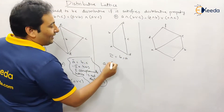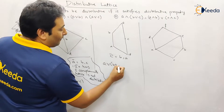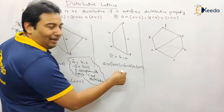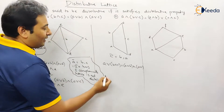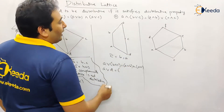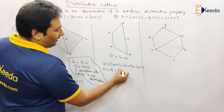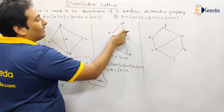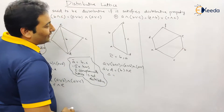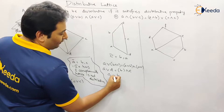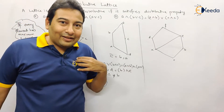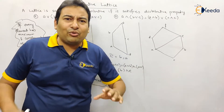We need to show it's not satisfying the property, so which pair will we consider? c, b, and a. So let me take the a, b, c pair. That is a join (b meet c) versus (a join b) meet (a join c). b meet c is d. a join b is b. a join c is e. a join d is a. b meet e is b. This property is not satisfied, therefore this lattice is not distributive.